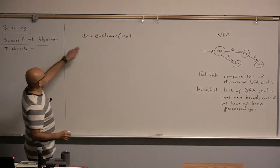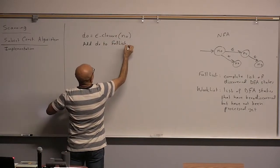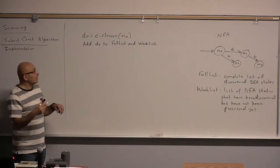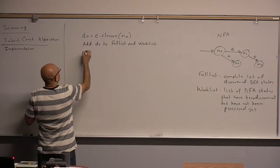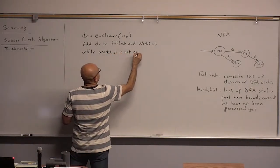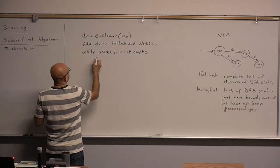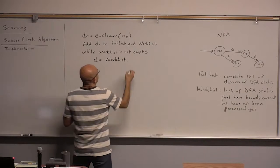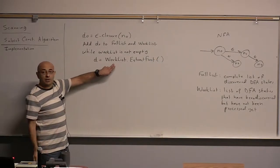So the work list is list of DFA states that we are still working on that have been discovered but have not been processed yet. So in this case, when we discover this state, we will add it to both, add D0 to full list and work list. Then this algorithm would be taking one state from the work list, one state at a time, and looking at the transitions of that. So there will be a while loop while work list is not empty. You will get a state, let's call it D. D equals work list dot extract first. So get the first state from the work list.